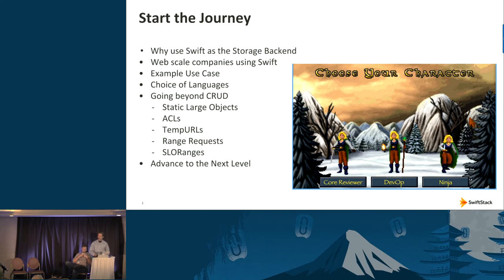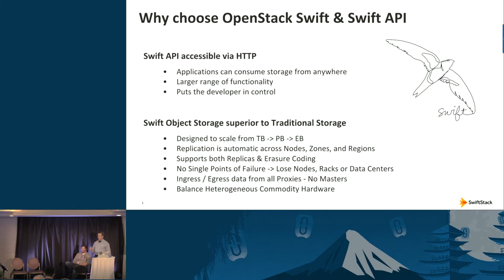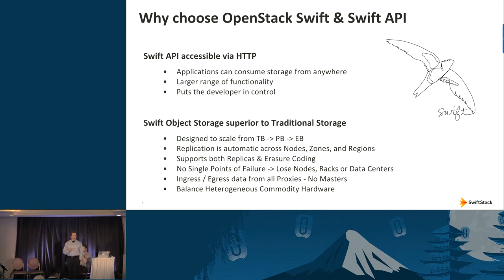To start your journey, we're going to give you a list of things you will need to accomplish. The first step is figuring out why you're going to use OpenStack Swift. The best things about OpenStack Swift start with its API — it's different from a file system or block system. You can access it from anywhere without a VPN tunnel. It uses the REST API, not CIFS or NFS.